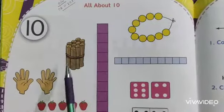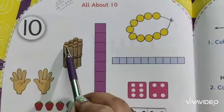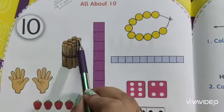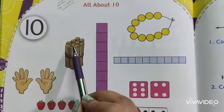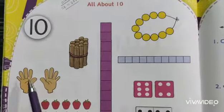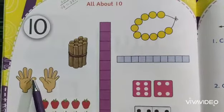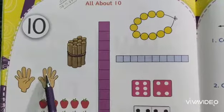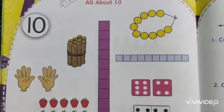So let's count the logs. How many logs are there? 1, 2, 3, 4, 5, 6, 7, 8, 9, 10. Here also how many fingers you can see? 1, 2, 3, 4, 5, 6, 7, 8, 9, 10. It's also 10.